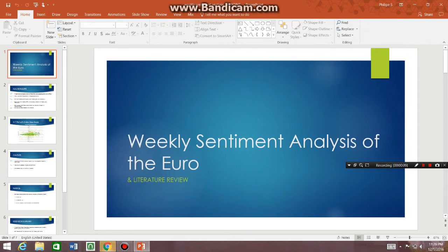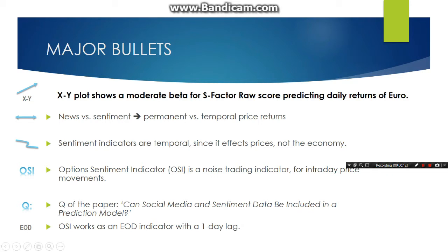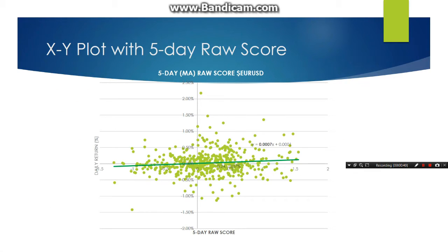With the first slide, I tested the data based on the underlying S-Factor raw score — the 5-day moving average of the raw score from Social Market Analytics — and its ability to predict the daily returns of the Euro. The 5-day raw score was my proxy for the sentiment factor, and the proxy for the Euro is the underlying Euro ETF. These are all observations from May 2014 up until May 2016, and as you can see, there's a moderately positive slope.